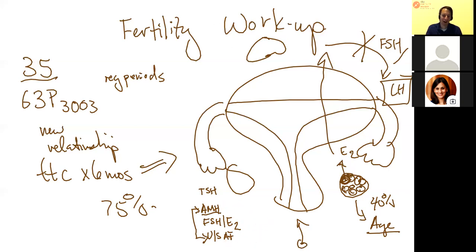You typically want to draw these between cycle day two and five. People talk about day three because that's when it was normally done, but day two through five is when you want to get the FSH estradiol. You need to get the estradiol because you can't interpret an FSH by itself - you need the estrogen level.